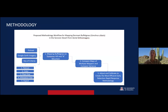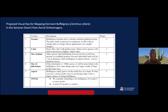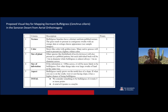We mapped buffelgrass on Tumamok Hill and A-Mountain, then compared maps from multiple mappers and compared variants. Each week we adjusted and calibrated to create the most efficient first steps in this early detection rapid response methodology. Here's the proposed visual key for mapping dormant buffelgrass in the Sonoran Desert. The five criteria we took into account were texture, color, the size of the plant, the size of the infestation, and the aspect it was growing on. If it totaled five or more points, it was highly considered to be buffelgrass.